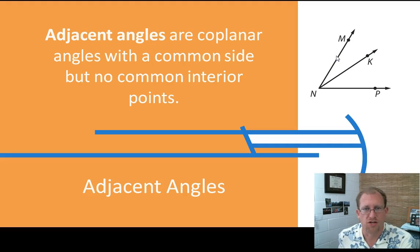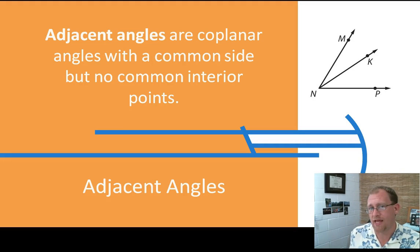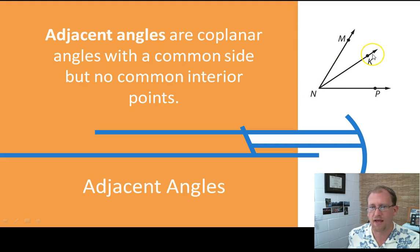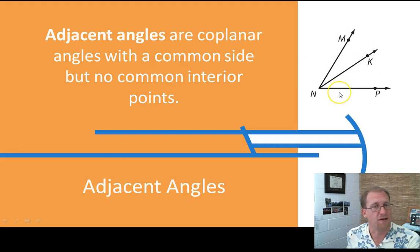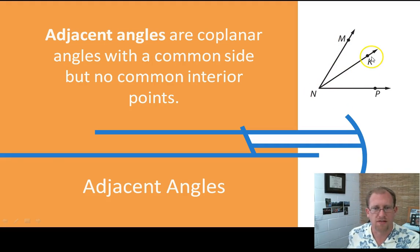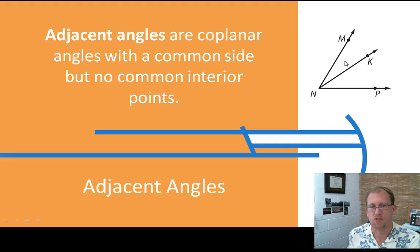Adjacent angles are angles that share a side and are in the same plane. Angle MNK and angle KNP both share ray NK as a side of the angle, and they are in the same plane. Angles in the same plane that share a side are adjacent. They don't have any common interior points — otherwise they'd be overlapping — so their interiors are different, and they share a side.